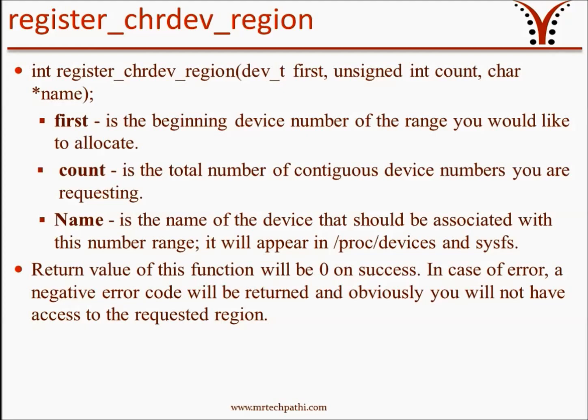The second argument is 'count', which is of type int. Count is the total number of contiguous device numbers you are requesting — usually 1, but can vary depending on your number of devices. The third argument is a character pointer 'name', which is the name of the device that should be associated with this number range. It will appear in /proc and sysfs. If you open a Linux terminal and type 'cat /proc/devices', you can see an entry for this device name. The return value will be 0 on success; in case of error, a negative error code will be returned.